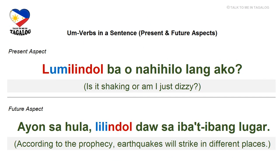Present aspect: Lumilindol ba o nahihilo lang ako? — 'Is it shaking or am I just dizzy?' The present tense lumilindol is used when the ground is shaking due to an earthquake. Nahihilo means dizzy, lang means just or only, and ako means I.